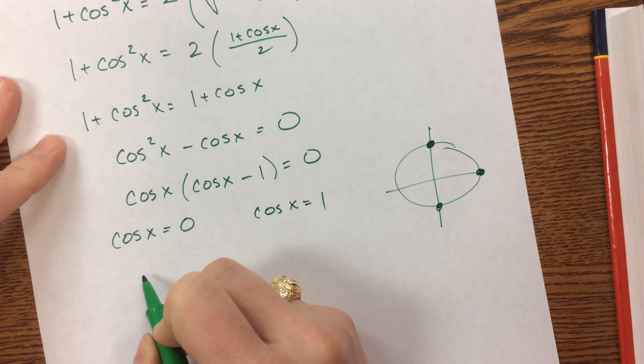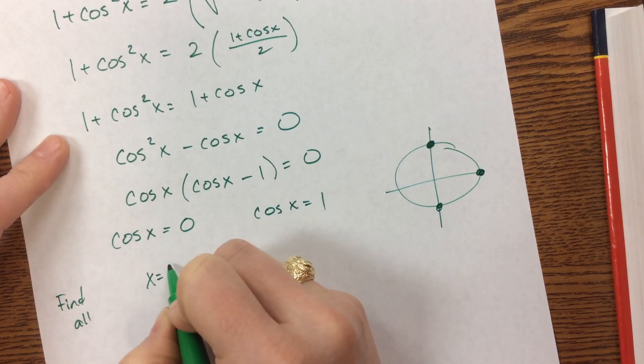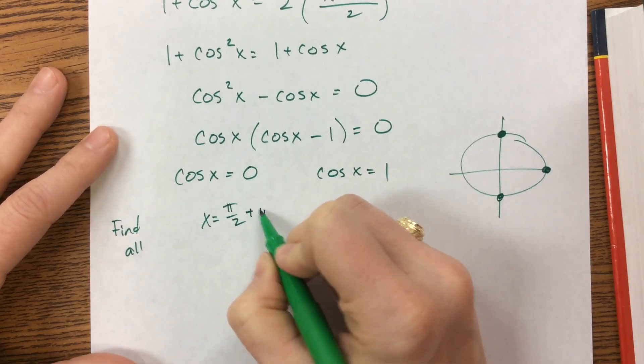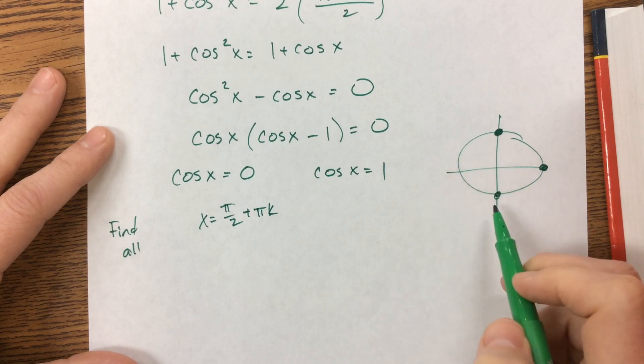So from this one, if I had said find all, I would say x equals π over 2 plus π k, because that goes from here to here, adding π, I go half the circle each time.